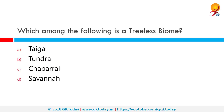Which among the following is a treeless biome? The correct answer is tundra. Tundra is characterized by treeless low vegetation which is less than 1 meter in height, with short perennials and frozen water. Typical plants include sedges, lichens, mosses, grasses and dwarf woody plants. Typical animals include snowy owls, muskoxen, reindeer, polar bears and migrant birds.